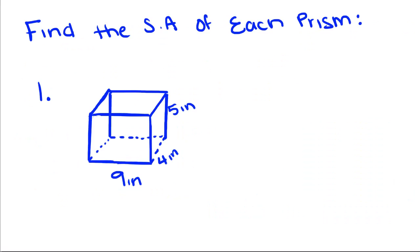So let's do an example. Find the surface area of each prism. First we're going to find the area of this front and this back. So this right here is a rectangle. We're going to take 9, which is the length, times, if you look at this one, this one's 5.